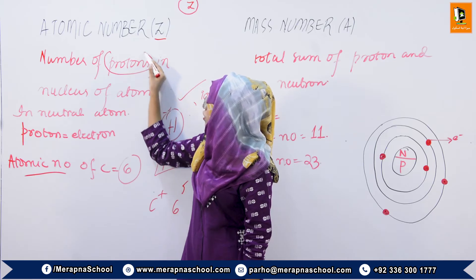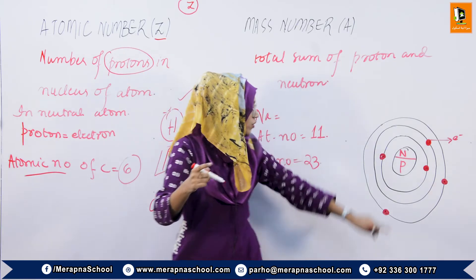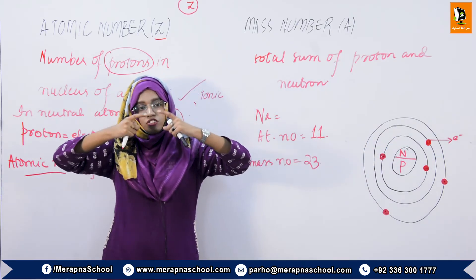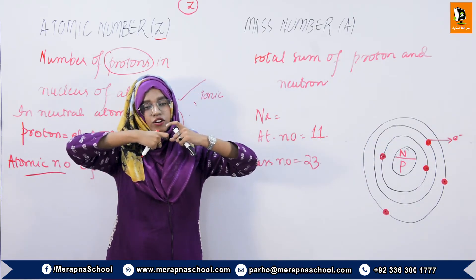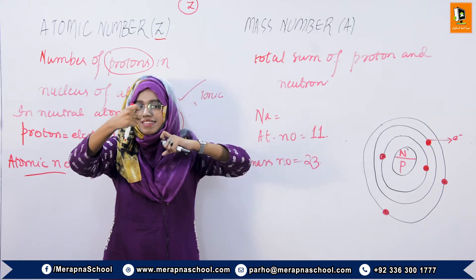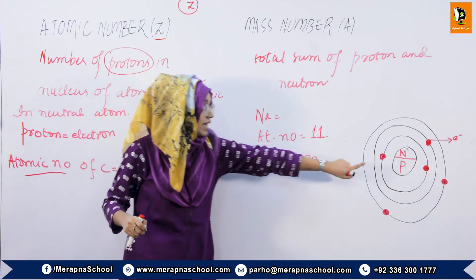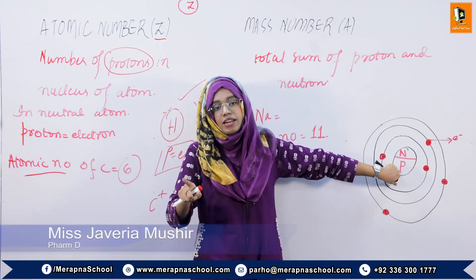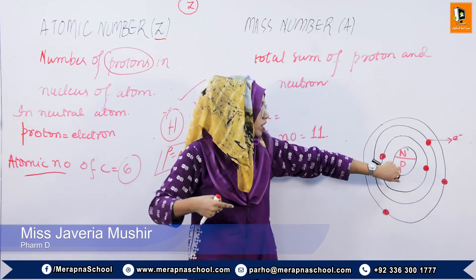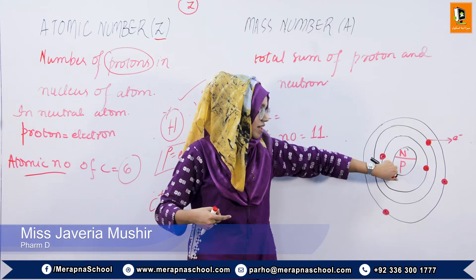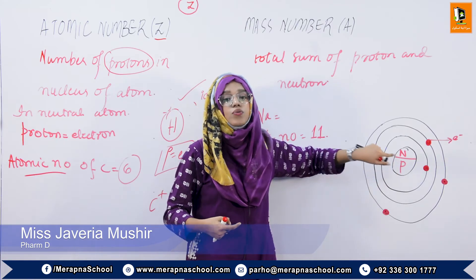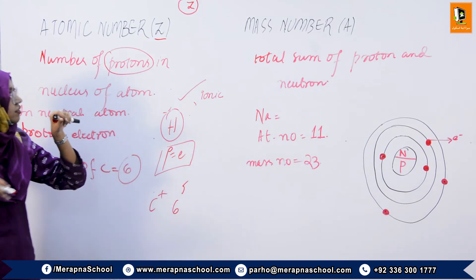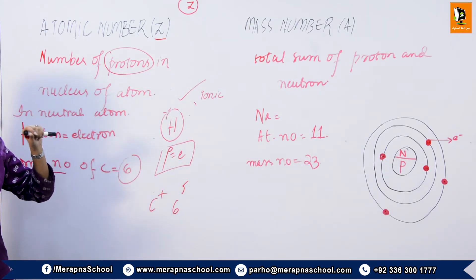Although the number of electrons are the same in a neutral atom, the electrons can change because electrons in shells can be gained or lost by any atom. But the proton count doesn't change because the proton resides in the nucleus. So what is atomic number? It is the number of protons.